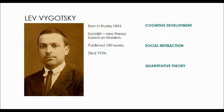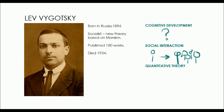Vygotsky's basic focus was cognitive development. He studied the changes in the way in which people think as we get older and how we know things differently with age. He studied social interaction between the developing person and society, and thought this was very important in the development of cognition. His theory is a quantitative theory in that there are no stages — development happens gradually all the time.